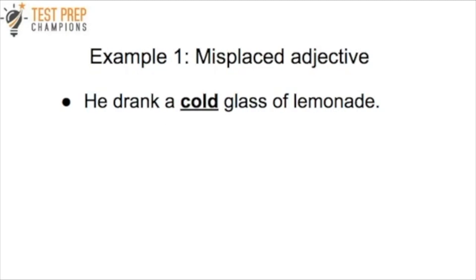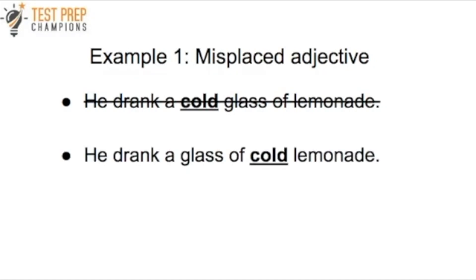Example number one is a misplaced adjective. An adjective is simply a descriptive word. In this case, the word 'cold' is our adjective. Consider the sentence: 'He drank a cold glass of lemonade.' The word cold is paired with the word 'glass,' so if we read the sentence literally, it sounds like it's telling us that the glass itself is cold, not the lemonade. To be grammatically correct, we'd want to change it to say, 'He drank a glass of cold lemonade.'